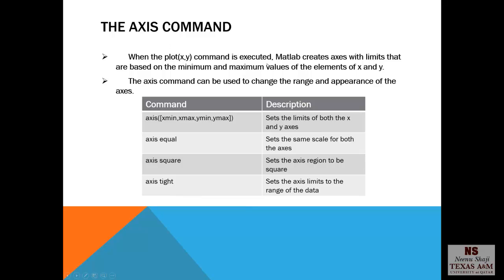The axis command. When the plot x, y command is executed, MATLAB creates axes with limits that are based on the minimum and maximum values of the elements of x and y. The axis command can be used to change the range and appearance of the axes. First we have axis, then xmin, xmax, ymin, ymax in square brackets. It sets the limit of both the x and y axis. Axis equal sets the same scale for both the axes. Axis square sets the axis region to be a square. Axis tight sets the axis limits to the range of the data.